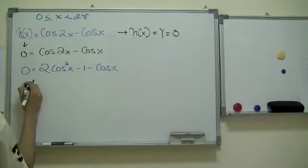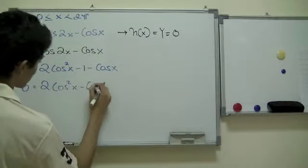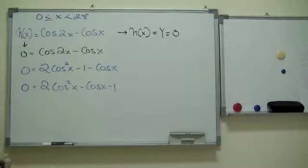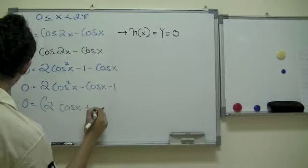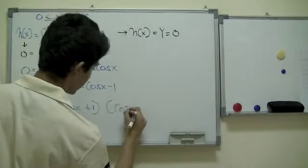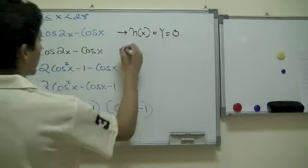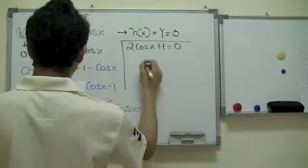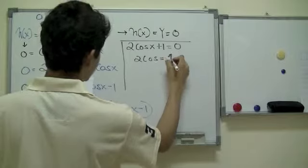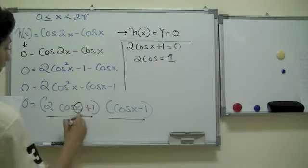Now we have zero would be equal to two cosine squared X minus cosine X minus one, which basically equals two cosine X plus one, multiplied by cosine X minus one. Now, what we can do is put this in another form. Two cosine of X plus one which is equal to zero, then we take the second factor and equal it to zero as well. So, what's the value of X when each factor is zero?